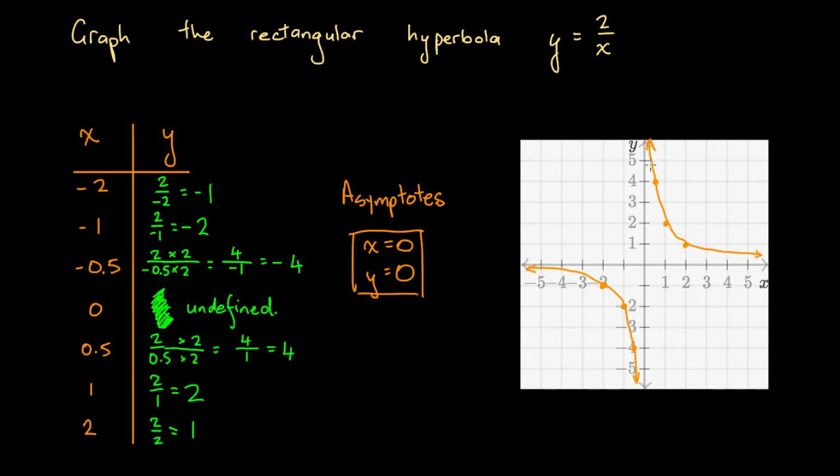So consequently, these two lines, x equals 0 and y equals 0 are the asymptotes and we can draw them by drawing a dotted line.